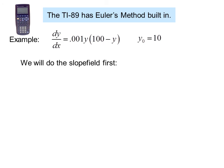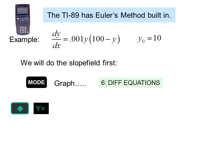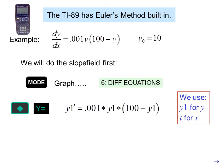We will do the slope field first. Change the graphing mode to differential equations. Then press diamond y equals and enter the differential equation: y1 prime equals 0.001 times y1 times the quantity 100 minus y1. We use y1 for y and t for x, although there is no x in this particular differential equation.